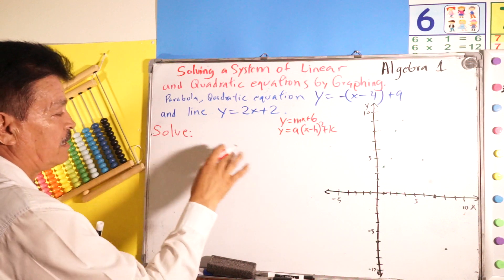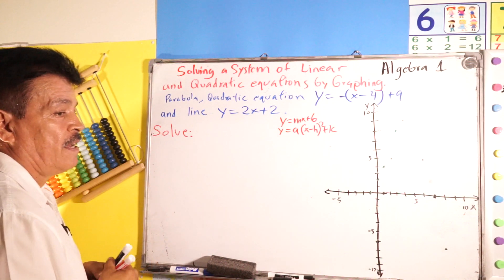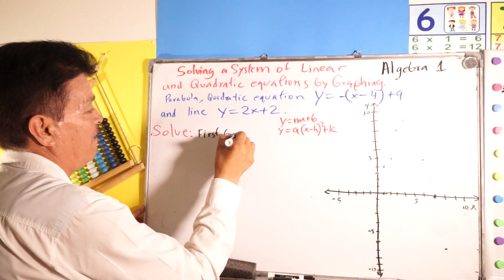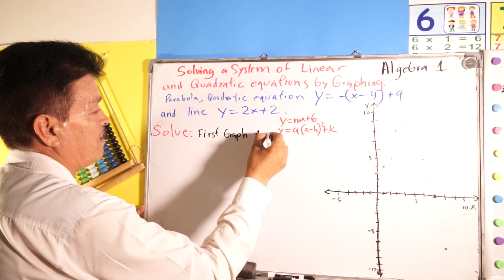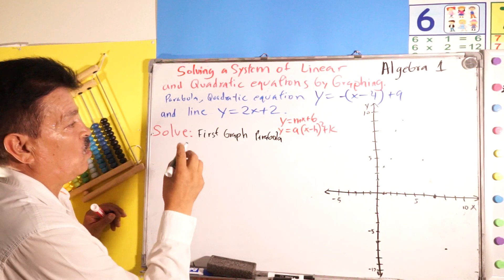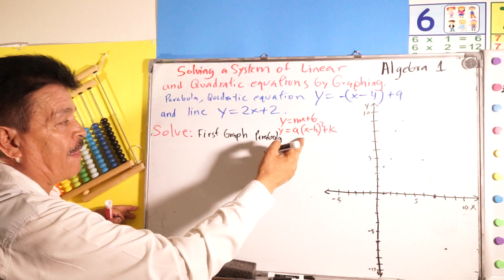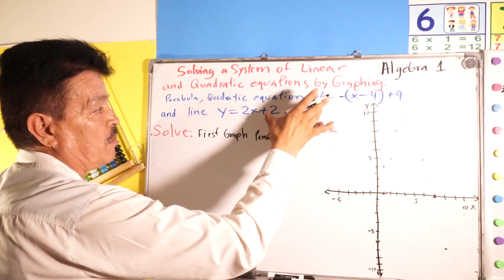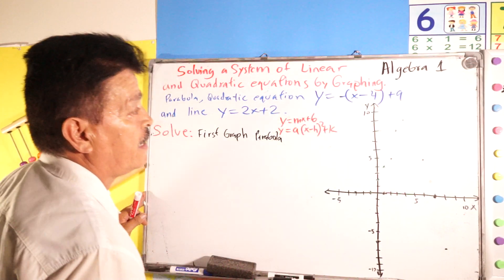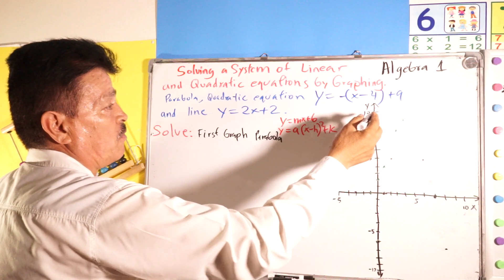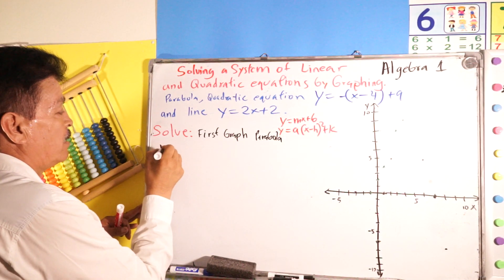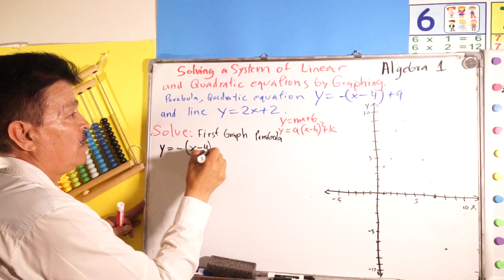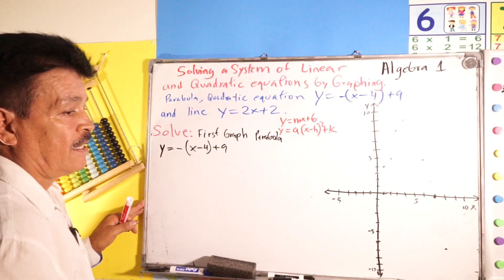Step one: first, graph the parabola. Our parabola from the problem is y equals negative (x minus 4) squared plus 9. Let's write and work with this formula now.